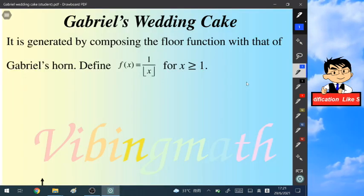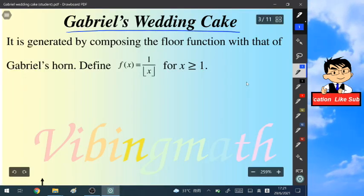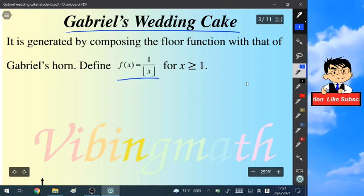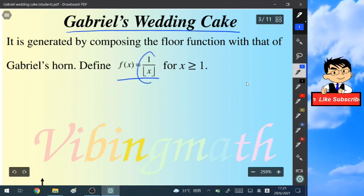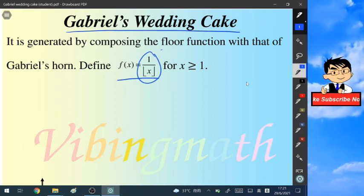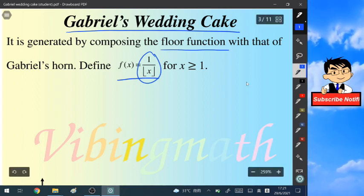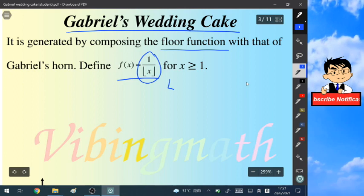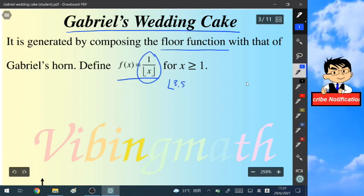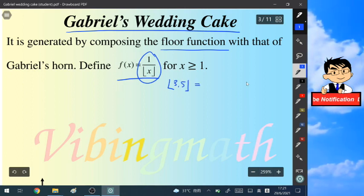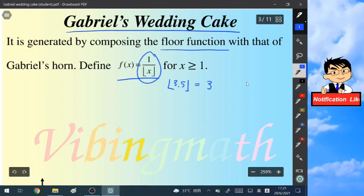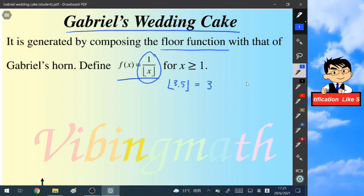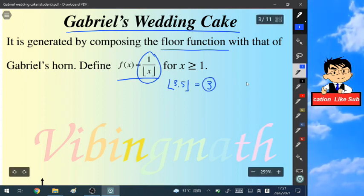In order to make the Gabriel's wedding cake, we define a function f(x), which is equal to 1 over floor of x. So what is the floor function of a variable? For example, if we take the floor of 3.5, we will take its greatest integer which is not greater than 3.5, which is 3.